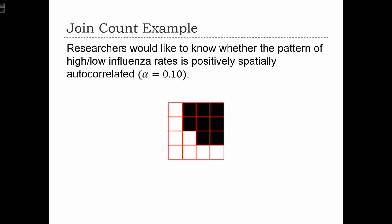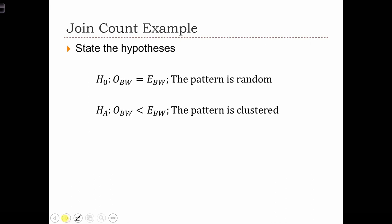Let's recompute the joint count statistic with this spatial pattern. Here again, we are going to look to see if this spatial pattern shows evidence of clustering. First of all, we are just going to state the null and alternative hypotheses. These are the same that we used before, since the alternative is that the pattern is clustered.